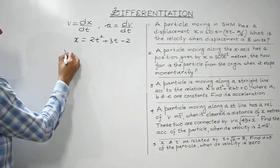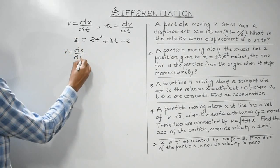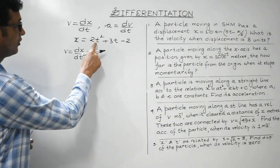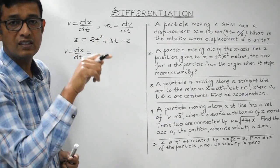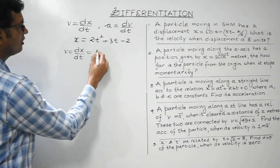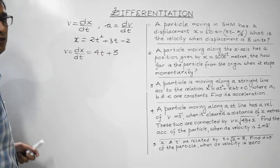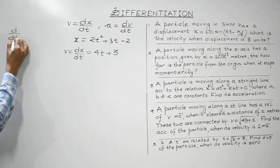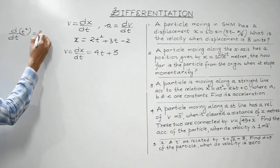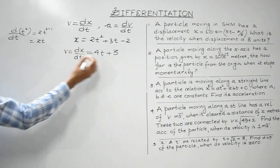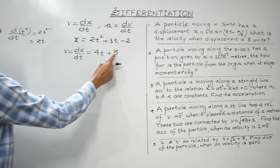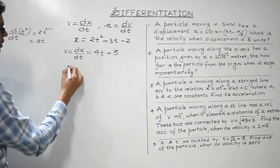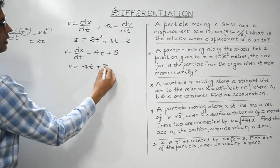Velocity is given by differentiation of displacement with respect to time. Taking 2 outside, the differential of t² with respect to t is 2t, giving 4t. Differentiating 3t gives 3, and the constant −2 differentiates to 0. So velocity = 4t + 3. Here I have used the formula d/dt(tⁿ) = n·t^(n−1).